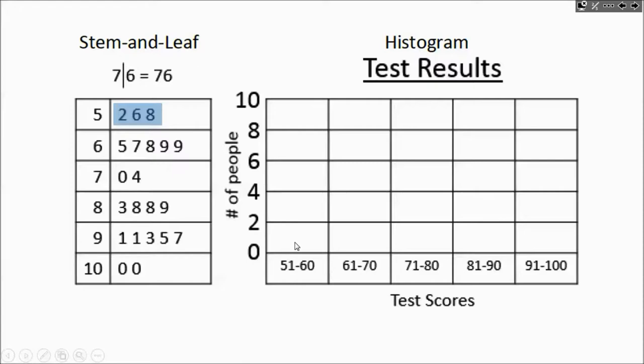Notice how it's the number of people, it's numbered 2, 4, 6, 8. So three people would be halfway between two and four.